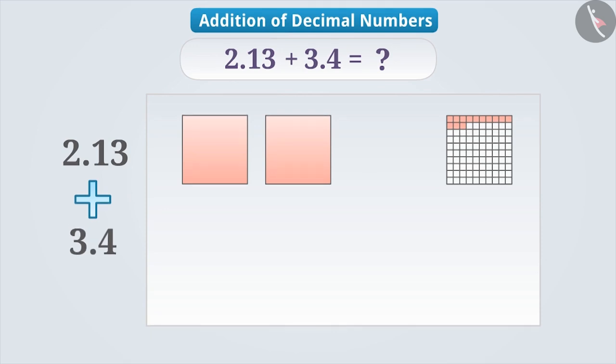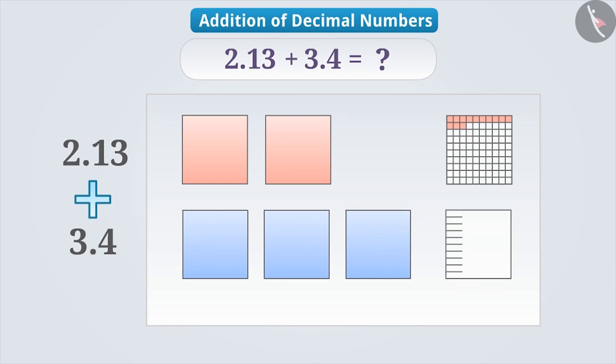Similarly, in 3.4, there are three wholes, so we will take three such squares. And to represent 4 tenths, we will take one more square, which is divided into 10 equal parts and shade 4 parts of it.